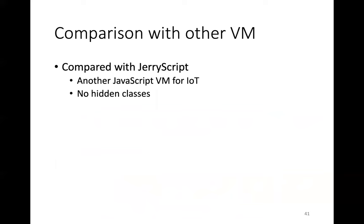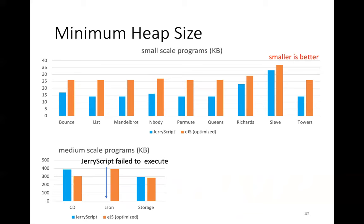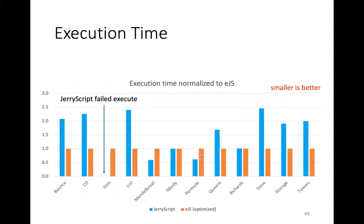Finally, we compared the performance of EJSVM with another JavaScript VM for IoT, JellyScript, which does not use hidden classes. For minimum heap sizes, JellyScript was better for small-scale programs. However, EJSVM can also execute programs with less than 40KB of heap. For programs that require more than 100KB of the heap, EJSVM was better. For execution times, EJSVM was better except for Mandelbrot and Permute. These programs do not access normal properties frequently.